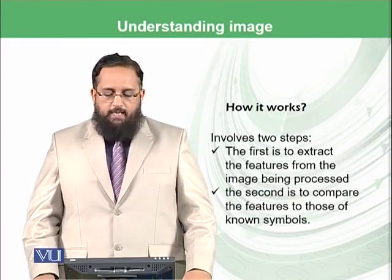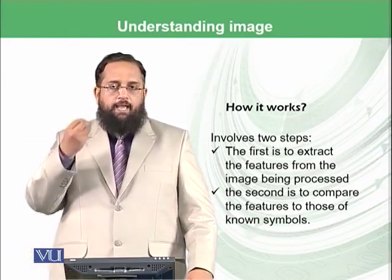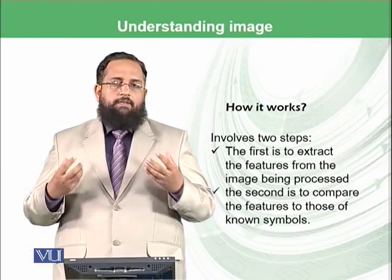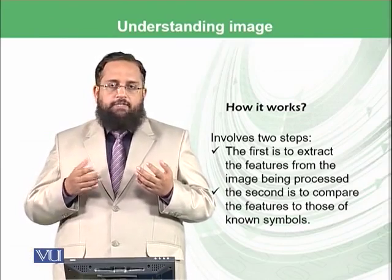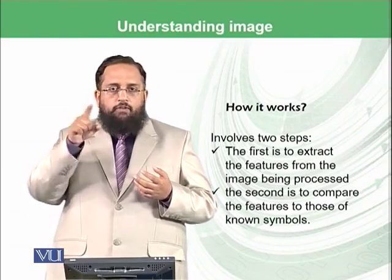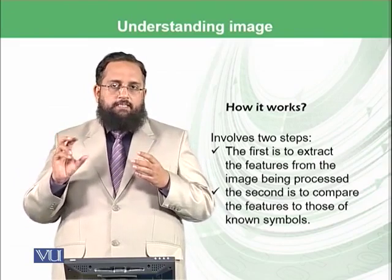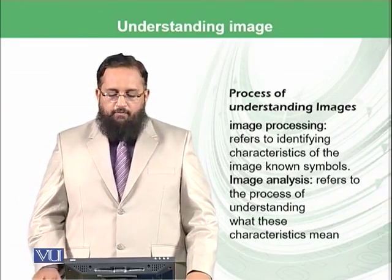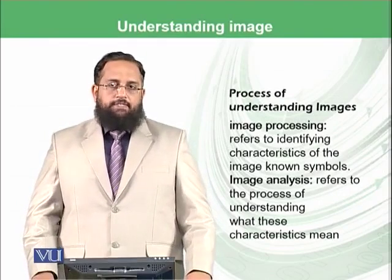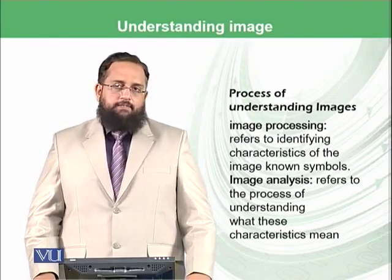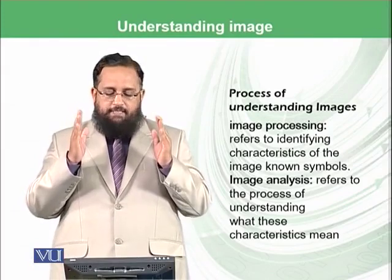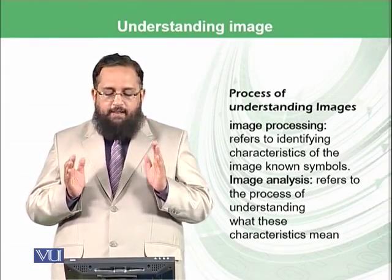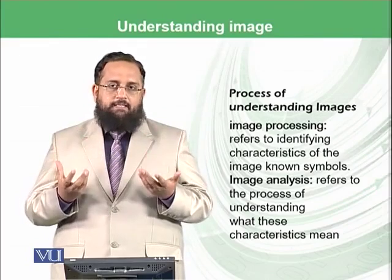How does it work? It works in two steps. The first step is to extract the features from the image being processed. The second is to compare those features to those for known symbols. For example, the feature for writing 1 is that there should be a straight line; for 2, there is a curve. Those extracted features are then compared with predefined features we already know. This process uses image processing and image analysis: image processing refers to identifying the characteristics of the image symbols, while image analysis refers to understanding what those characteristics mean and then making the decision.